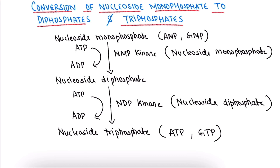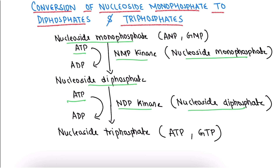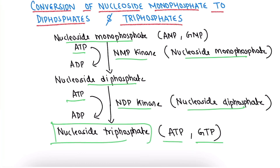Finally, conversion of nucleoside monophosphates to diphosphates and triphosphates. AMP and GMP are converted to nucleoside diphosphates in the presence of NMP kinase (nucleoside monophosphate kinase) and ATP. The nucleoside diphosphates are then further phosphorylated by NDP kinase (nucleoside diphosphate kinase) with another ATP, yielding the final products — nucleoside triphosphates ATP and GTP.